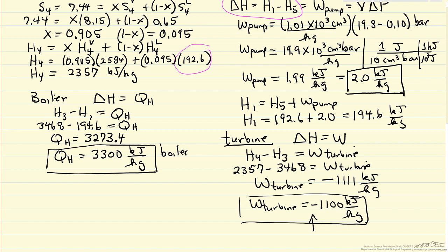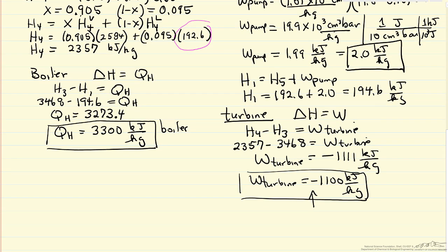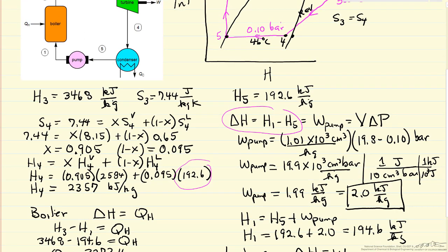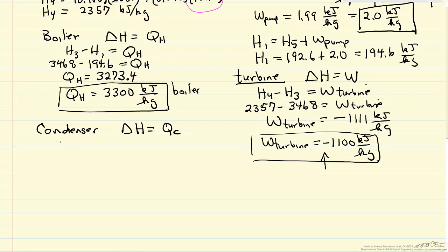Notice the negative sign. This is expected because we're extracting energy from the turbine as work. Now for the condenser energy balance: ΔH = Q_cold.